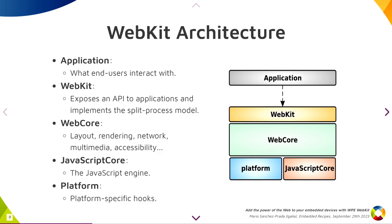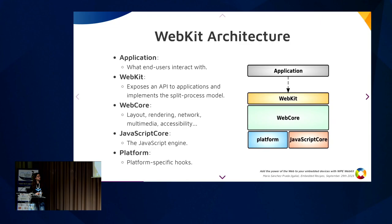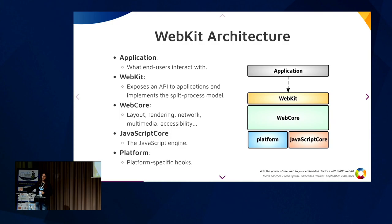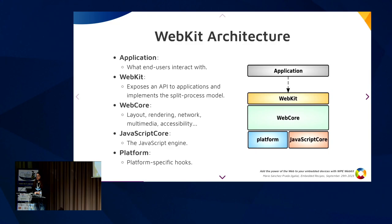WebKit architecture 101: there are basically three levels. At the top you have the API layer - the WebKit API - which is what you use from the application, what the application is linked against. It brings you the multiple process model of WebKit so that if some JavaScript crashes or a tab crashes, it doesn't bring down the entire browser. You get that for free just by using the WebKit API. The API is platform-specific - in Linux it's written in C with a GNOME-like API, on Mac it's Objective-C.